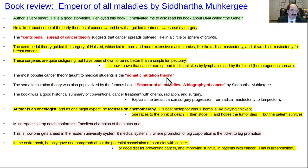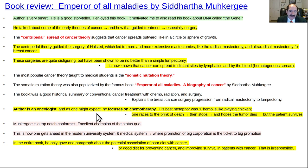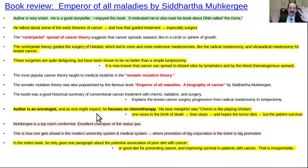There's a lot a patient can do to help themselves. The book was a good historical summary of conventional cancer treatment — the history of chemotherapy, the history of radiation therapy, and the history of surgical therapy. I do think the book is worth reading for those reasons. The author is clear at explaining things and is a good storyteller. As an oncologist, he naturally focuses on chemotherapy and tells its history like it's a heroic story. His best metaphor was that chemotherapy is like playing chicken with death — one races to the brink of death, then stops at the last moment, hoping the tumor will die but the patient will survive.